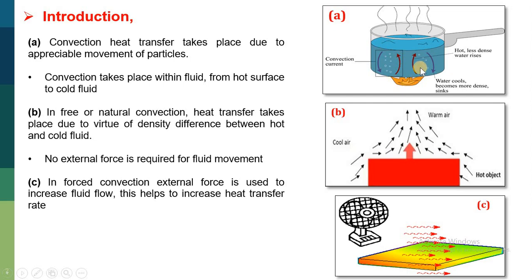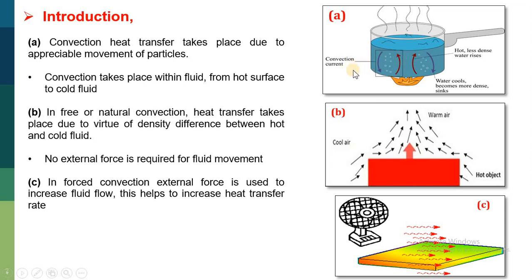Let's understand this diagram. If water is taken in a jar and placed over fire, then heat will transfer from the fire to the base of the jar and further to the water particles. Whenever heat is absorbed by the water particles, their density decreases and they move upward. The cold water particles, having higher density, will move downwards. By this, there is an appreciable movement of the water particles, and this process is known as a convection current.